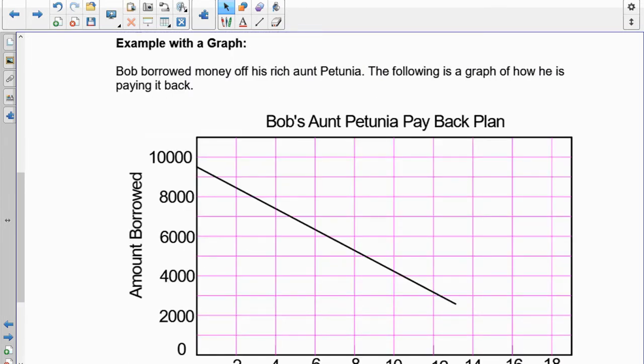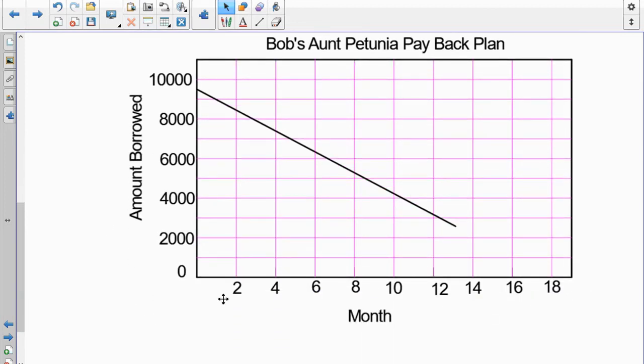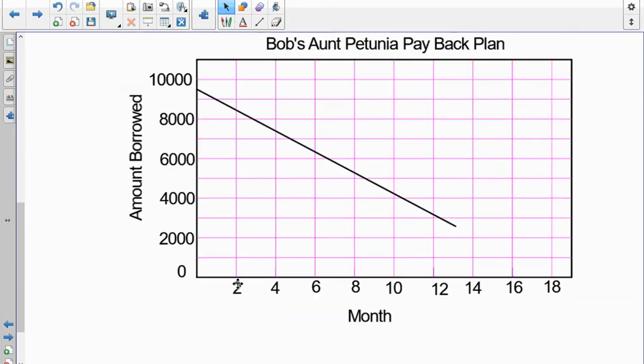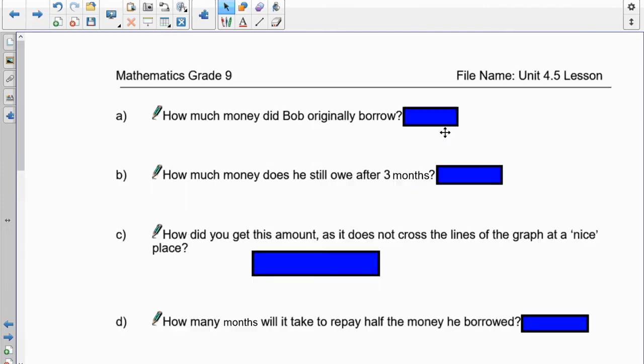Okay, let's look at our next example. Bob borrowed money off his rich aunt Petunia and the following is a graph of how he is paying it back. Take a look here. You'll see that we've got months on the bottom and this is going up every two months. On the side, we're having an increase by 2,000 each time. And if you look here, you'll notice that there's a line between the 0 and the 2,000. So, every line as we go up is going to be 1,000 and we're talking about dollars here. So, looking at our first question, it says, how much money did Bob originally borrow? To find that out, we have to go to where it started at 0 and this is where he began, right there. And that is right at 9,500. So, Bob borrowed 9,500 when he began.